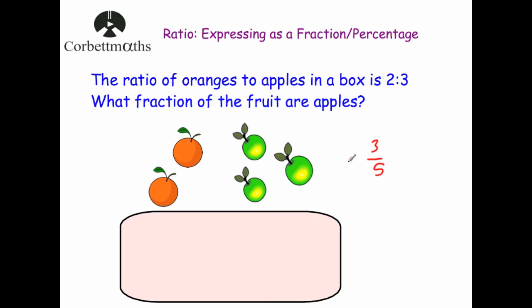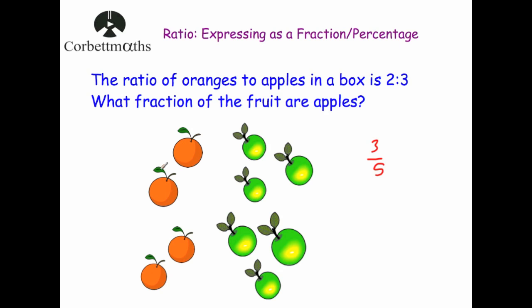Now you might be thinking there might not necessarily be five pieces of fruit in the box — the ratio of oranges to apples is two to three, so there could be 10, 15, and so on. So I've drawn another five pieces of fruit — another two oranges and another three apples, because for every two oranges there's three apples. Now if asked what fraction of the fruit here were apples: